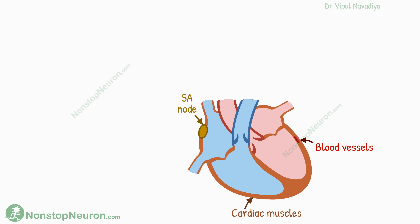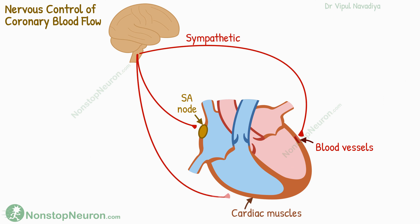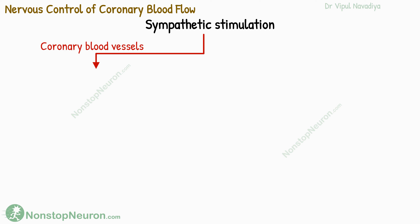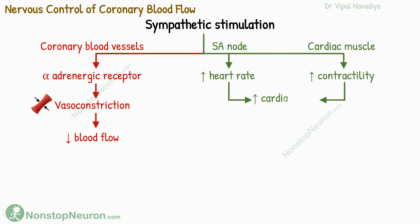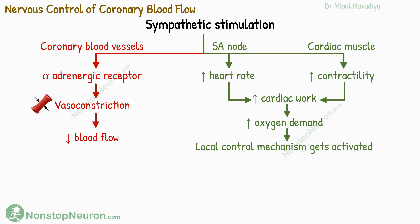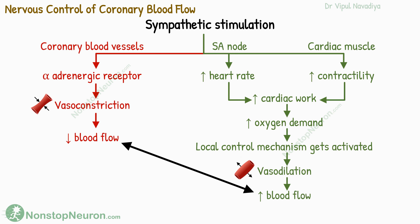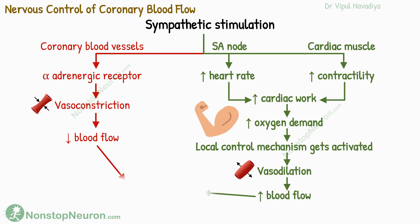Now let's talk about control by the nervous system. First, the effect of sympathetic stimulation — it affects coronary blood flow in two different ways. The direct effect is that sympathetic nerves release noradrenaline acting on alpha receptors on vascular smooth muscles, causing vasoconstriction which tends to decrease blood flow. However, the nerves going to the SA node increase heart rate, and those going to cardiomyocytes increase contractility. These actions increase cardiac work and therefore oxygen consumption, which brings local control mechanisms into action causing vasodilation, tending to increase blood flow. The local control predominates, so overall there is an increase in blood flow.